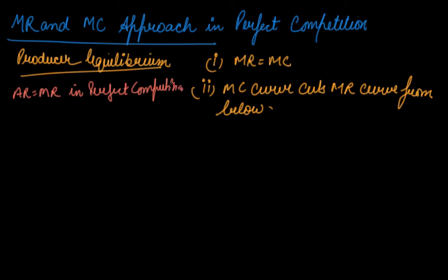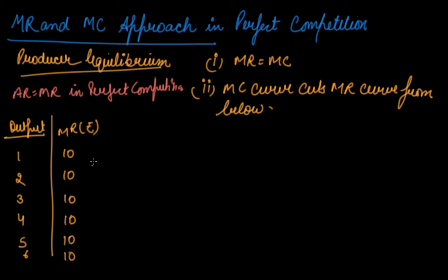So let's see this table. This is output: one, two, three, four, five, and six. This is your MR in rupees. It's constant in all the units of output produced. And this is your MC. Let's say eight, seven, six, eight, ten, and thirteen.